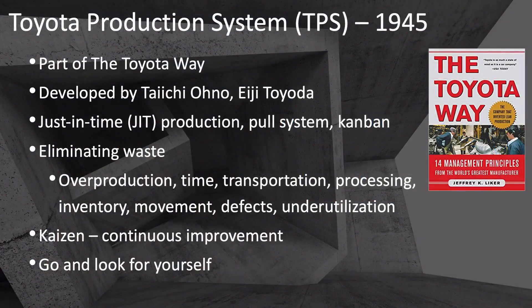The Toyota production system is the name given to the overall collection of Toyota's production philosophies, principles, policies, and practices. It's part of the Toyota Way, which includes more than just production. It was originally developed by Taiichi Ohno and Eiji Toyota. It includes just-in-time production as implemented using a pull system and Kanban. Instead of manufacturing parts according to a master plan and pushing them to the next step — creating unnecessary and costly inventories — just-in-time production makes more of a part when the next step down the line tells you to.